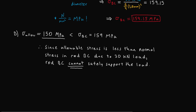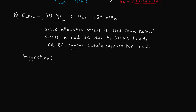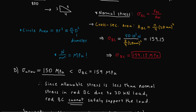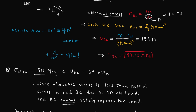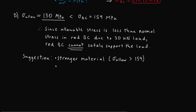Since the rod cannot safely support the load, we need to suggest a design improvement. Based on mechanics of materials, there are several options. The most obvious is to use a stronger material with a higher allowable stress — in this case, one greater than 159 megapascals. Alternatively, we can increase the cross-sectional area by using a larger diameter rod. From the stress formula, increasing diameter increases area, and since stress and area are inversely proportional, this results in a lower stress.